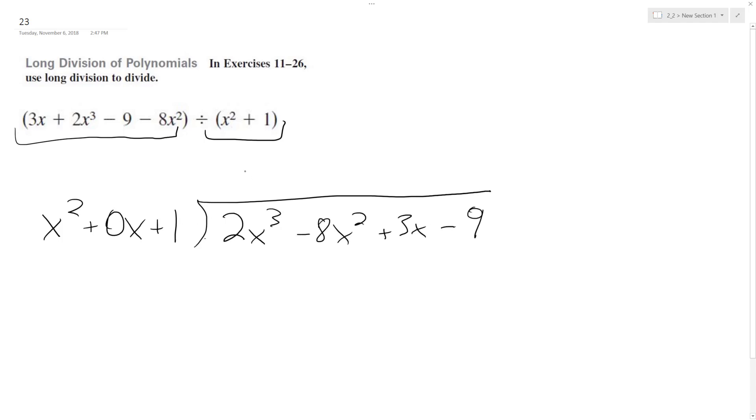So writing this out, this goes into this 2x times. So we get 2x cubed, and then this just ends up being 0, because anything multiplied by 0x is 0. And then plus 2x. Change the signs, and we end up with just x down here.